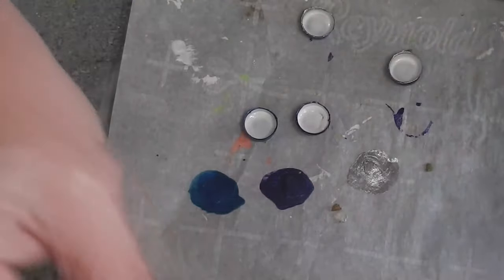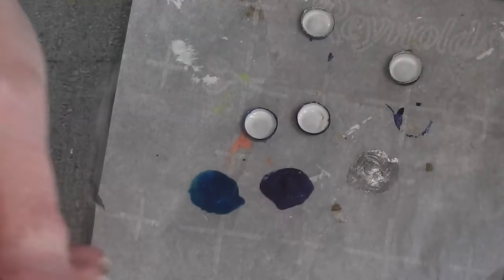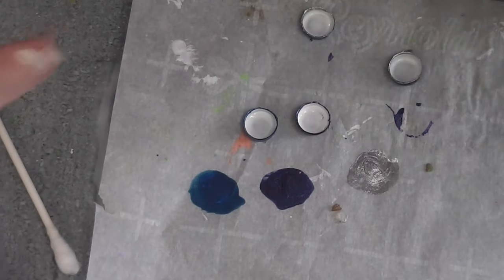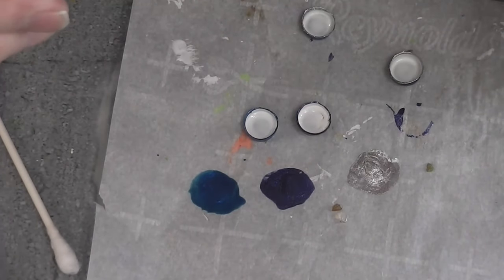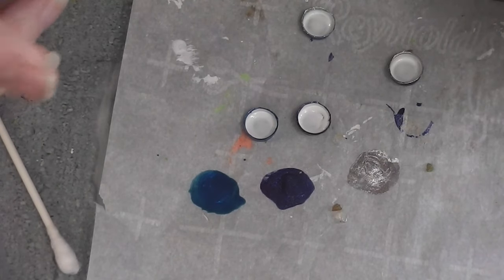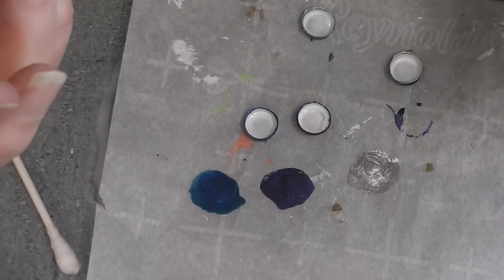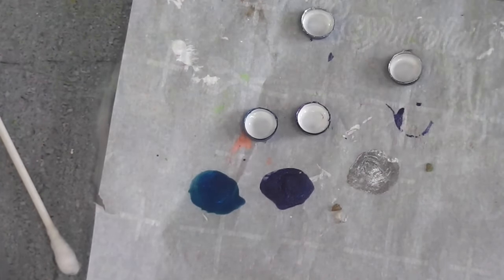That blister pack would otherwise have gone into the recycling or the trash. Nail polish like this is cheap. It's a buck or two a bottle. Almost free craft. Something that you can fill your dollhouse cabinetry with or that you can just use to contain some of the food that you make. So I hope you enjoyed today's project.